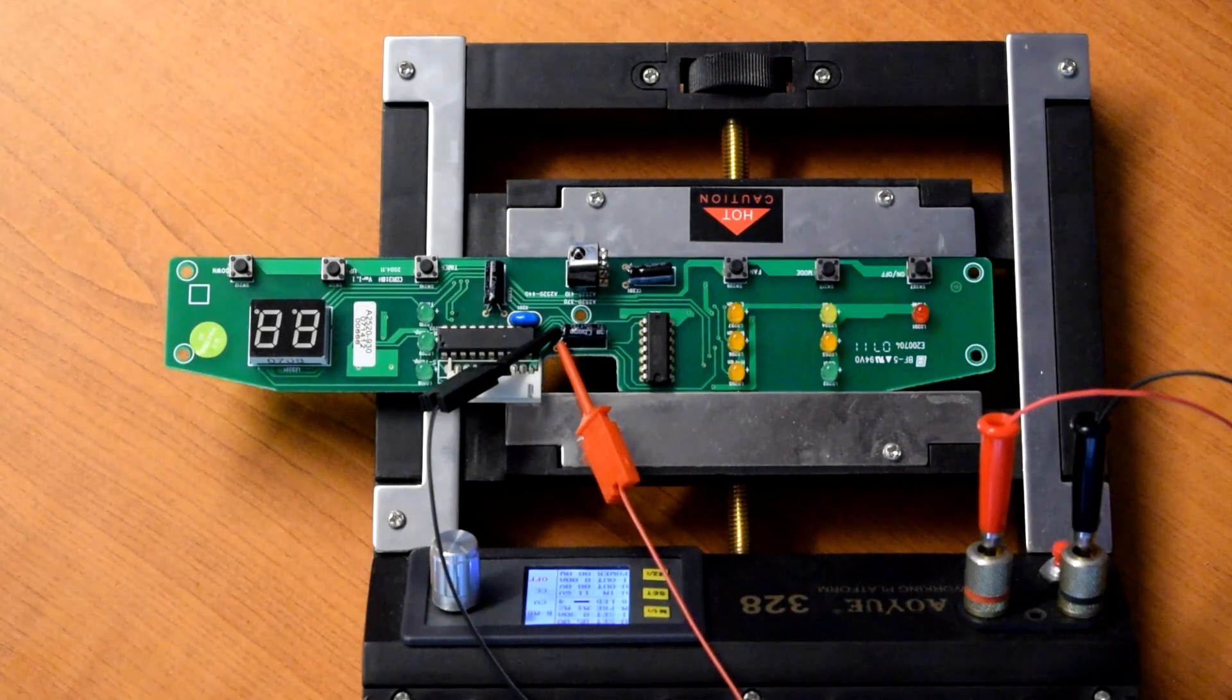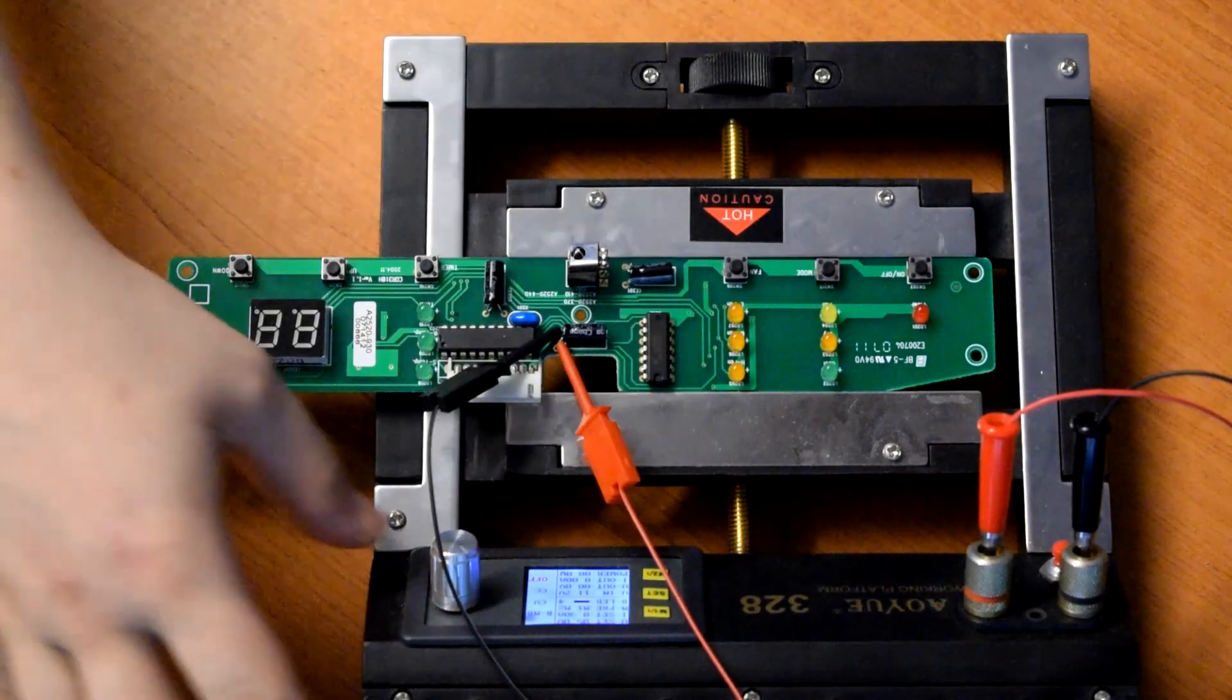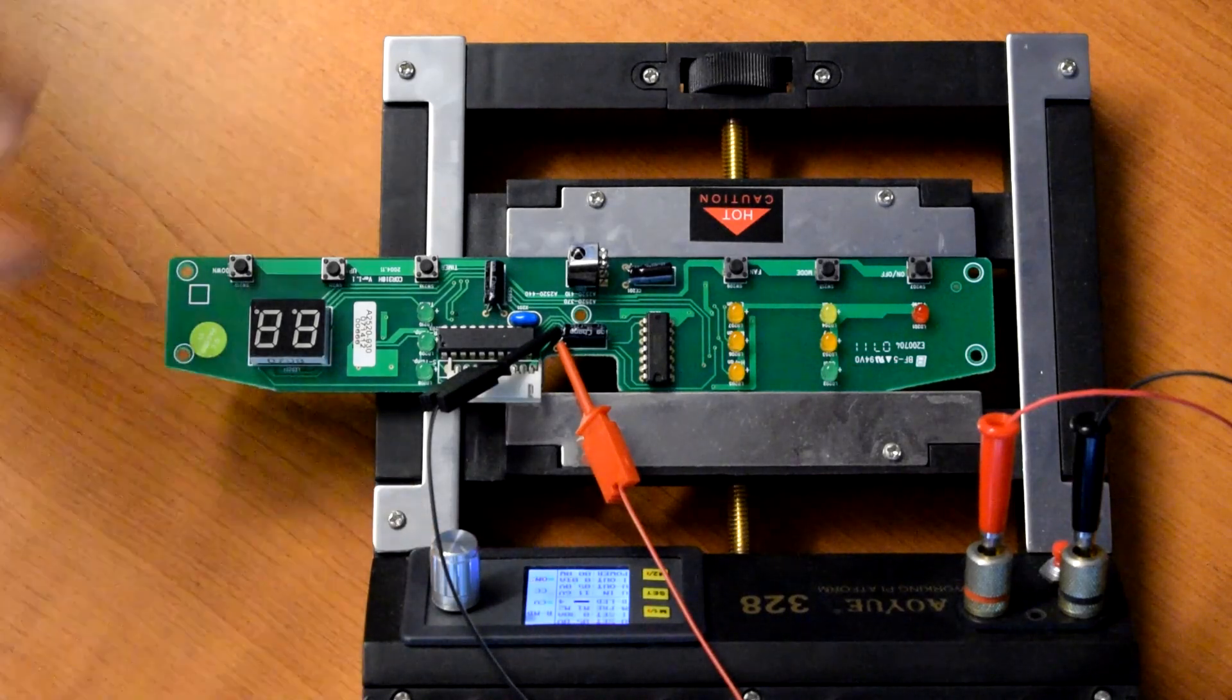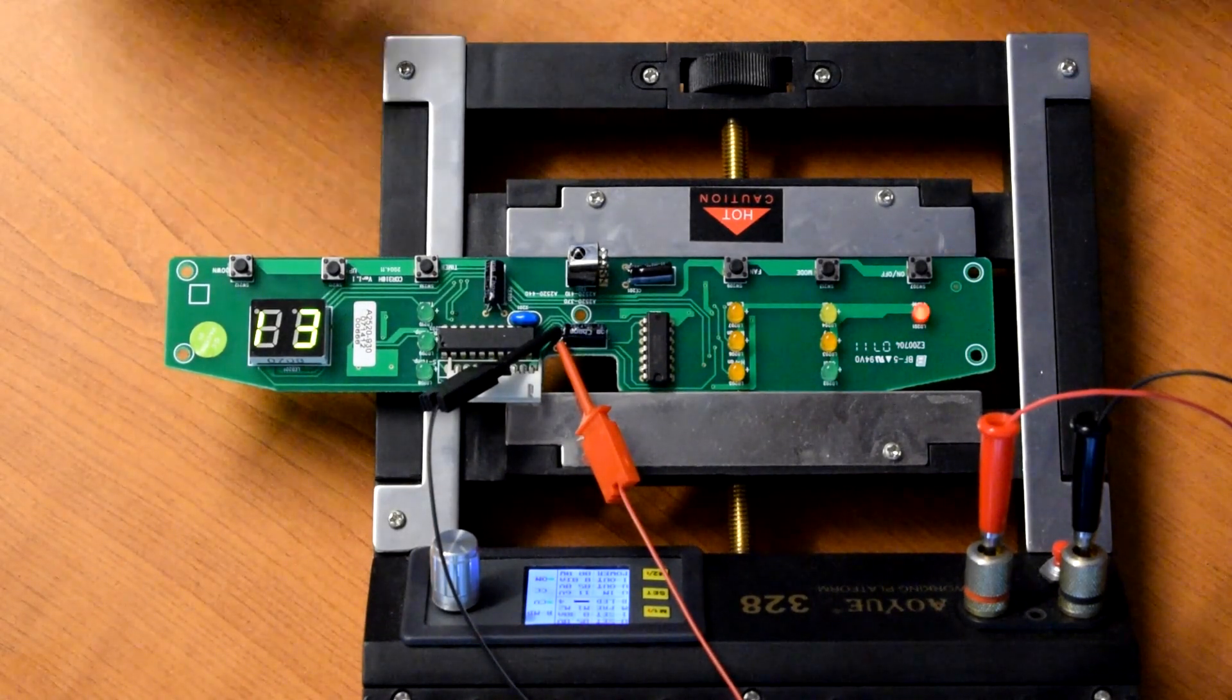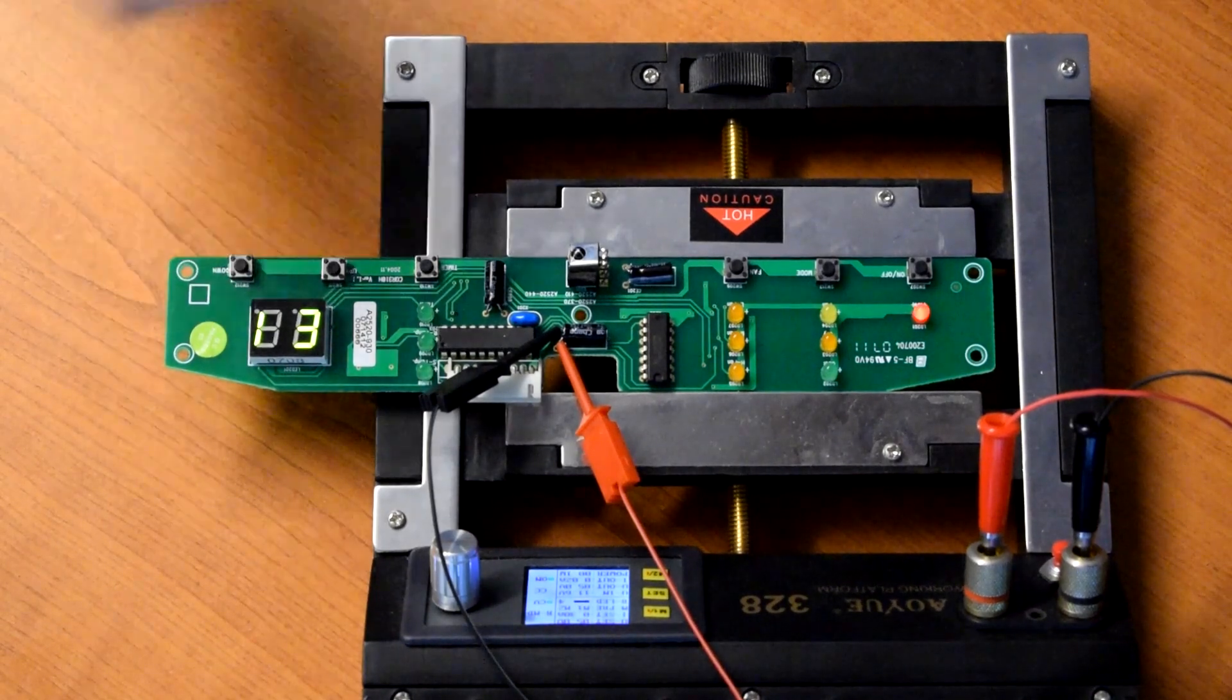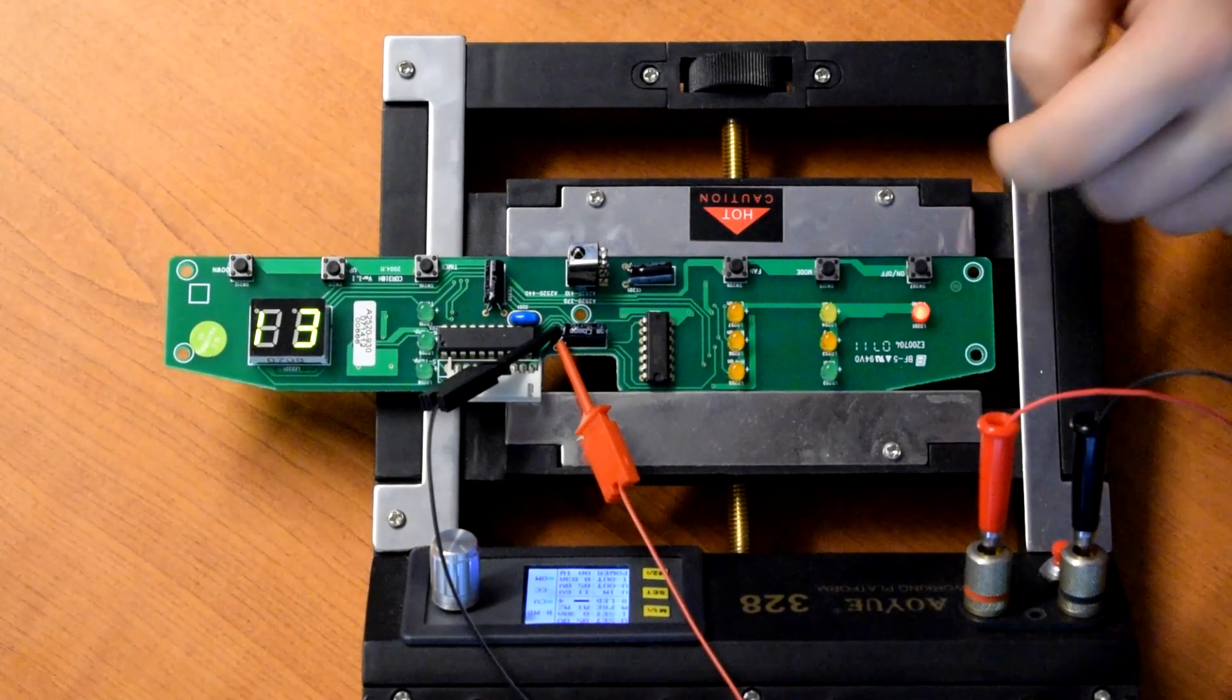I've got the board hooked up in the little vice and we'll give it 5 volts. I'm just powering it across the main input capacitor there. Because it's not connected to the rest of the air conditioner, we've got an E1 error and the error light is flashing.